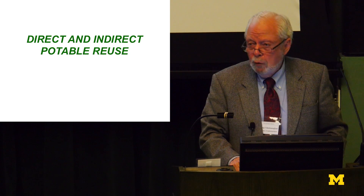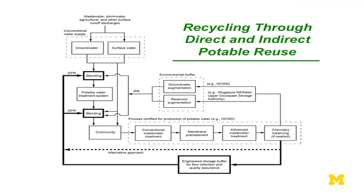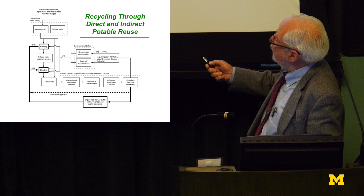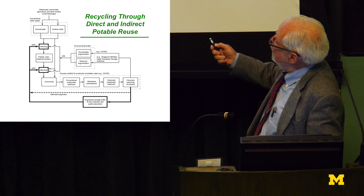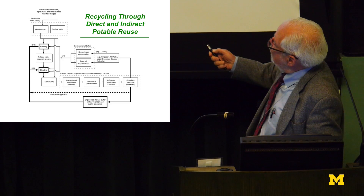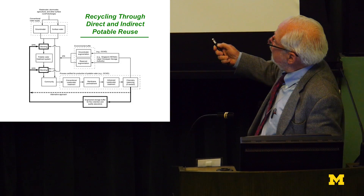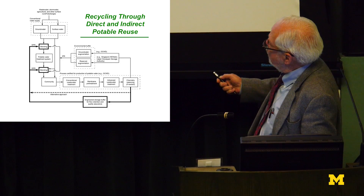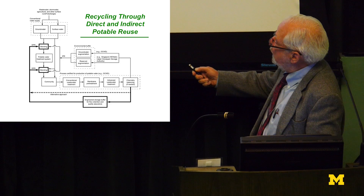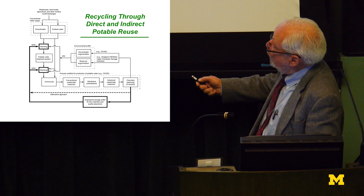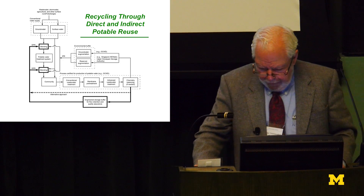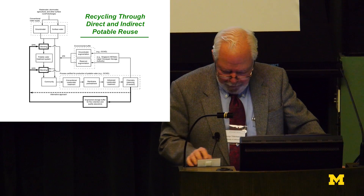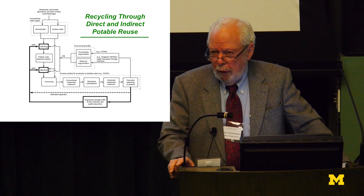The next big thing is direct and indirect potable reuse. With indirect potable reuse, we take water from the community, treat it, and put it into a storage reservoir or groundwater — Orange County for groundwater, or a reservoir or river like the Mississippi. What we're now talking about is taking this water through an engineered storage buffer and then reintroducing it either at the head end of a treatment facility or directly into the distribution system.